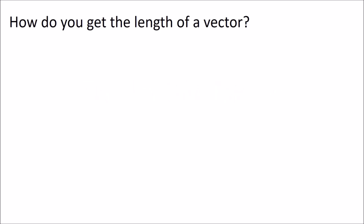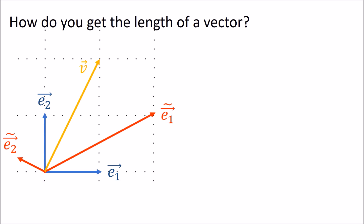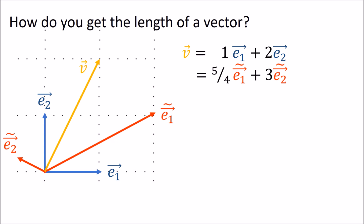So to start off, I'll ask the question: how do you get the length of a vector? Let's say I have this vector v living in this two-dimensional space here with the following components. We can think of the vector v as the longest side of a right-angled triangle, whose other two sides are parallel with the basis vectors e1 and e2.